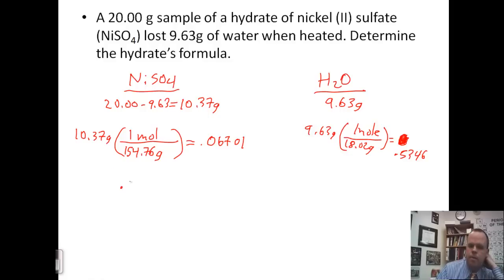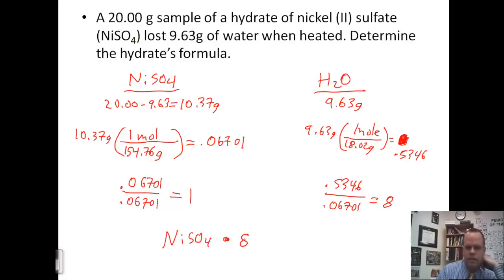Now, divide each number of moles by the smallest value. So in this case, the smallest value will be 0.06701, so that will give us 1. 0.5346 divided by 0.06701 will give us 8. So now we have our formula, NiSO4·8H2O. So it's just like an empirical formula problem, except now we're working with compounds instead of elements.